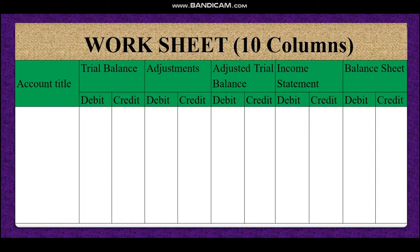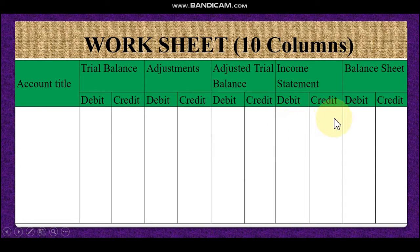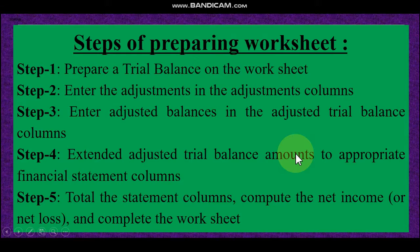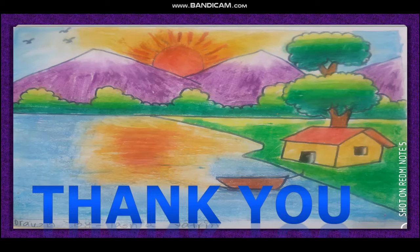I hope you understand. Again, the worksheet process: account title, then prepare trial balance, then record adjustments, then adjusted trial balance, then income statement — debit side expenses, credit side income — and balance sheet — debit side assets, credit side liabilities and equities. This is the worksheet. I hope all of you understand. If you have any questions, you can ask me or contact me by telephone. Thank you very much. Allah Hafiz. May Allah help.